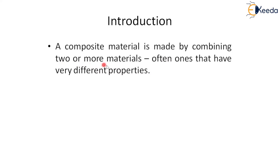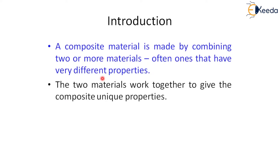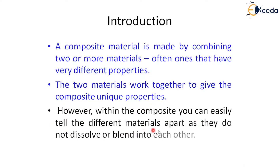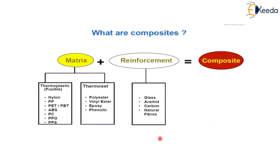That means two or three materials can be added in composite materials. Those two materials work together to give the composite unique properties — different from other materials. Within the composite you can easily tell the different materials apart, as they do not dissolve or blend into each other. This is the condition for a composite material.